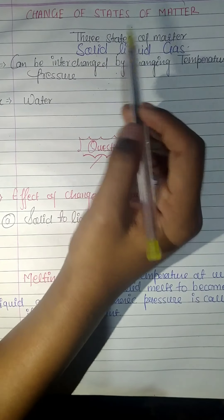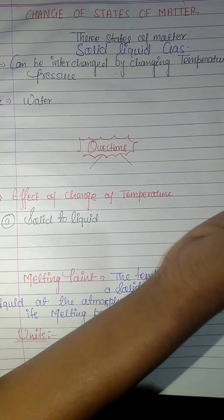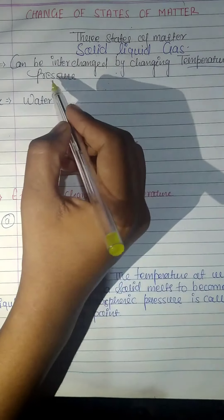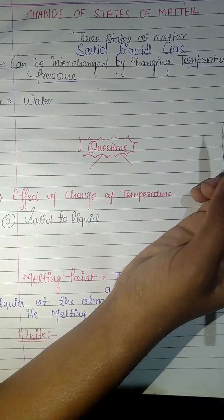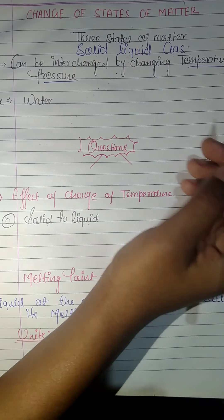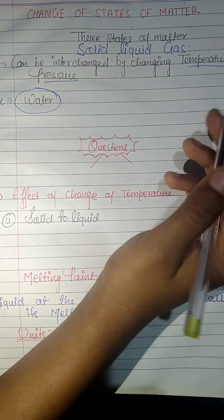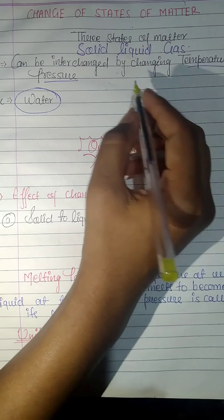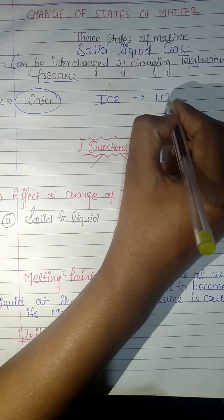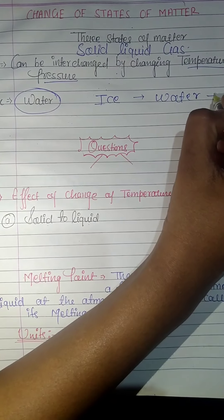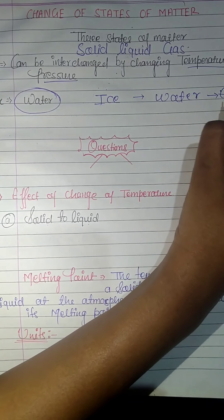Now how does that happen? Because of two main reasons: one is temperature and another is pressure. Because of these two factors, we can change any state of matter to any other. A very common example is water — water exists in three states of matter. In solid form it is ice, in liquid form it is water, and in gaseous form it is water vapor.